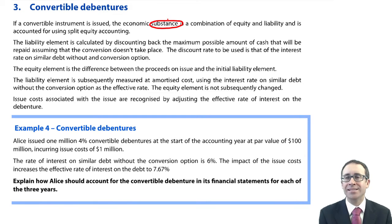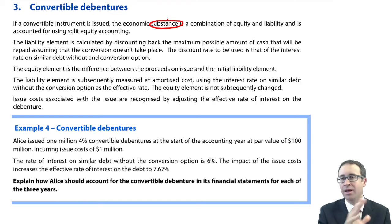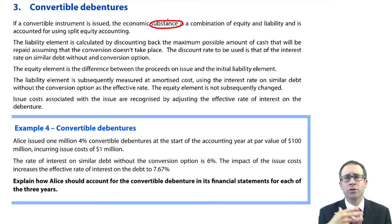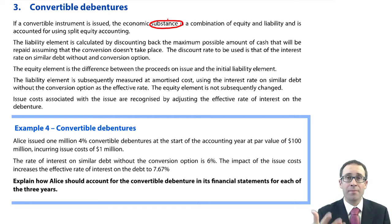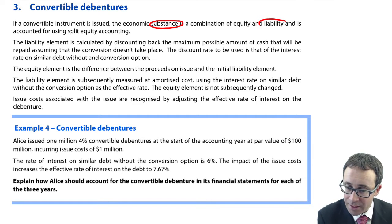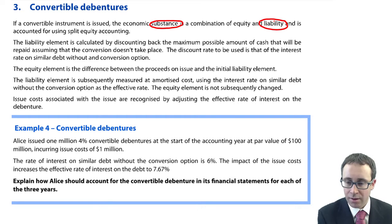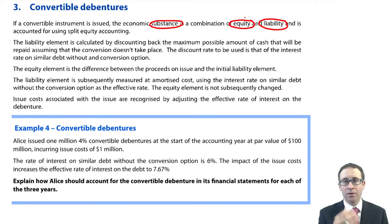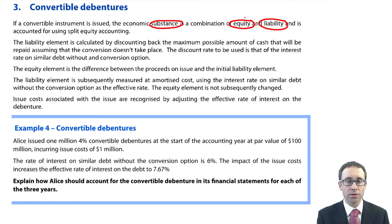Legally it is debt — it is a debenture. But when you look at it from a substance perspective, yes there is an obligation to pay back cash because you're paying the coupon rate of interest every year while it's in its debt format. So there is a liability to account for. However, there is also the potential for shares to be issued in the future, so there is an equity element as well.